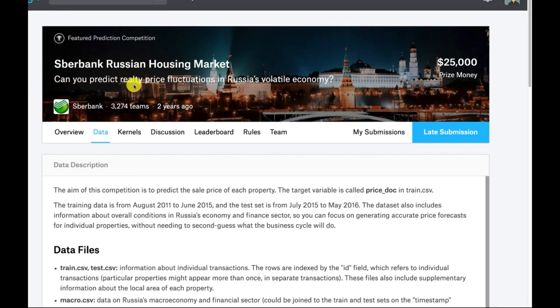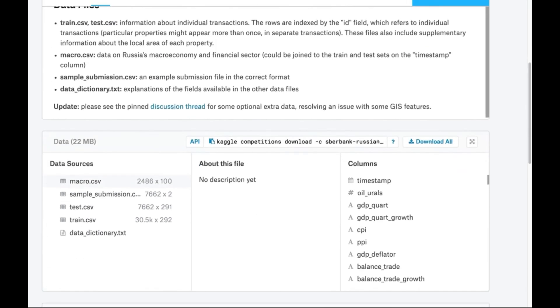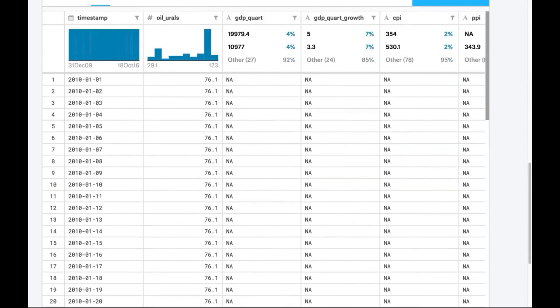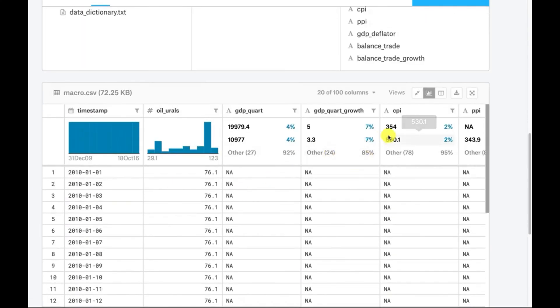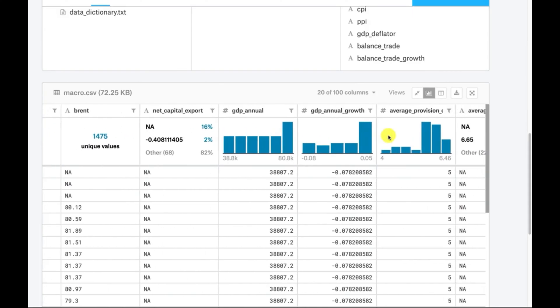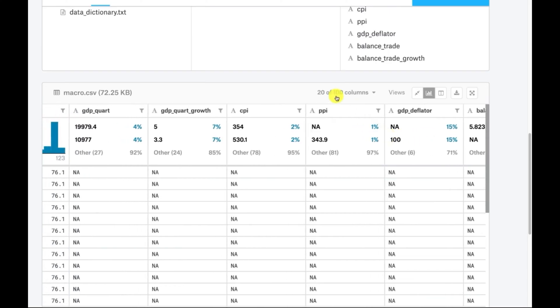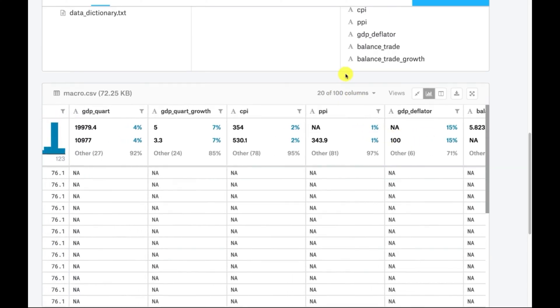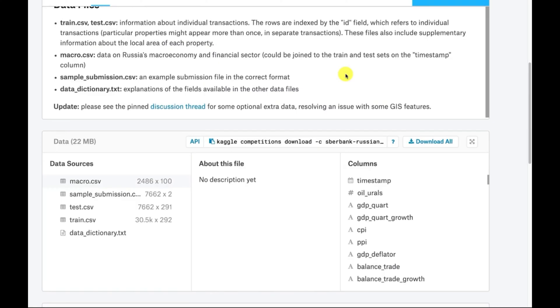So we're going to use the Sberbank Russian Housing Market dataset just to show you that Kaggle. It is essentially looking at, can you predict realty price fluctuation in Russia's volatile market? If you look at the data, they give you a whole bunch of input values here. They scroll across. So those are all the columns in the distributions. We're going to be looking at those. There are 100 total columns. So it's got a lot of columns that you're dealing with.